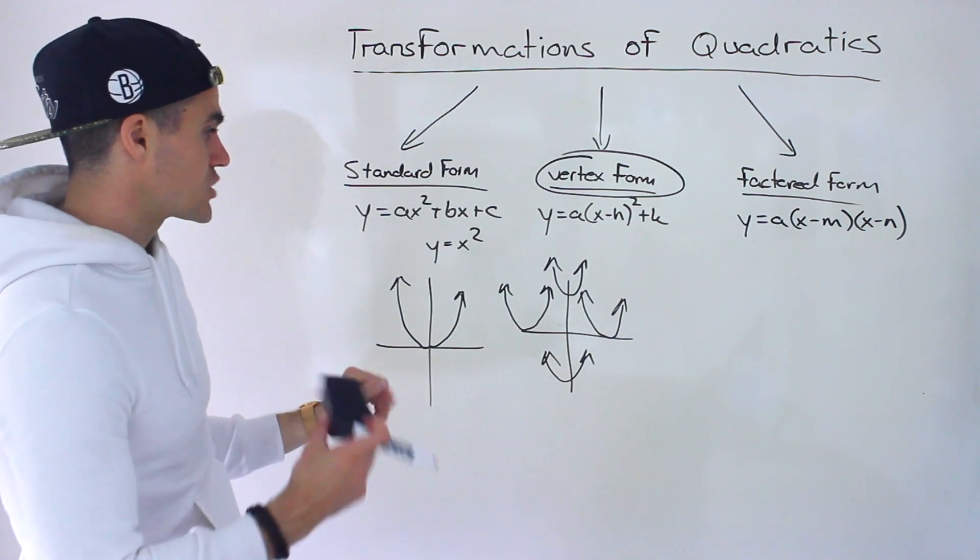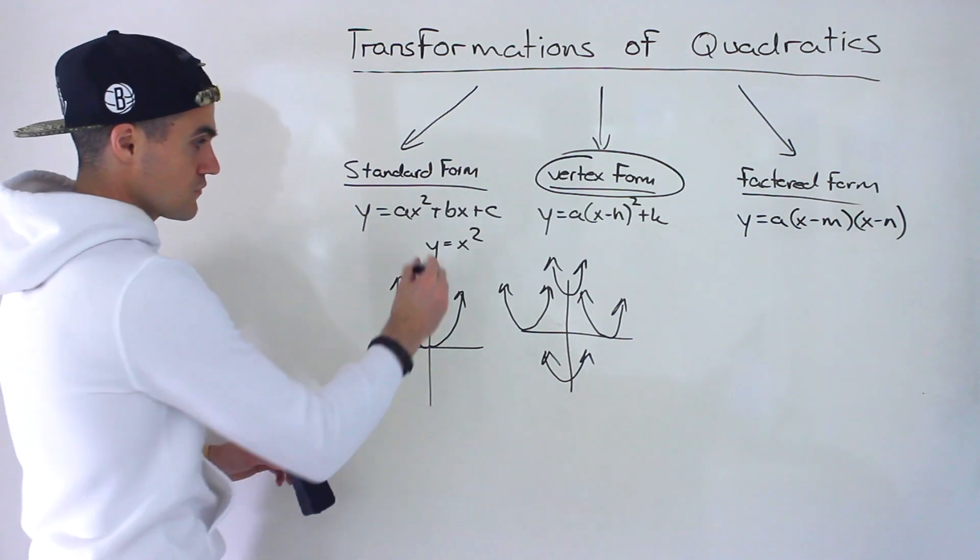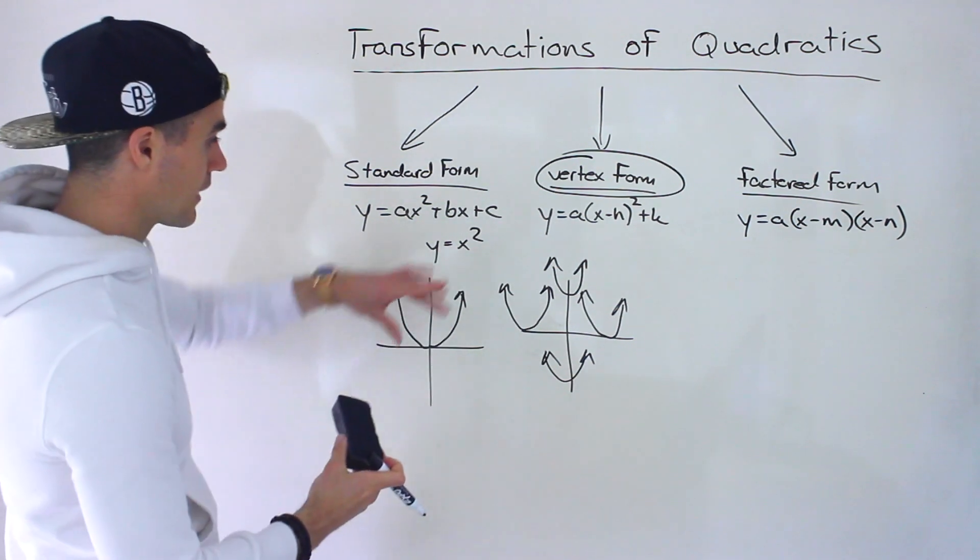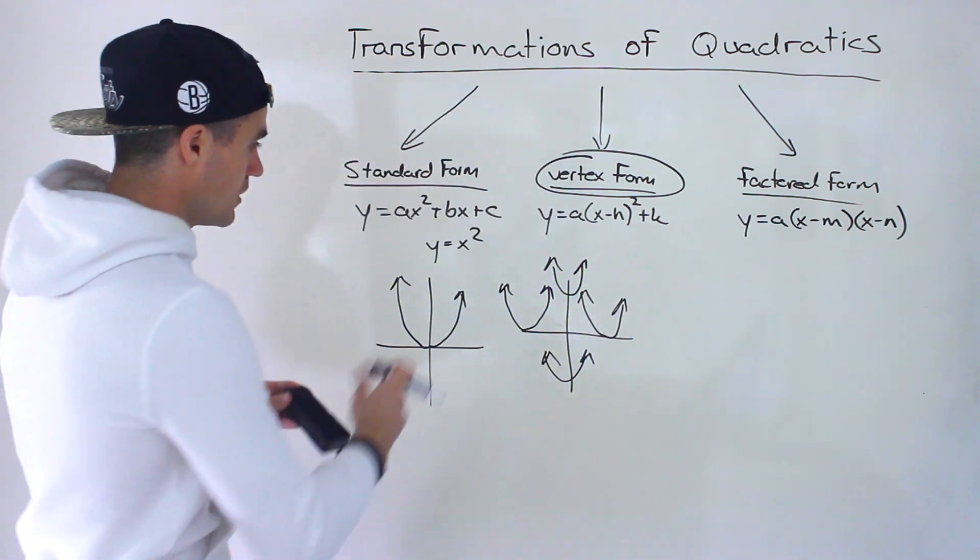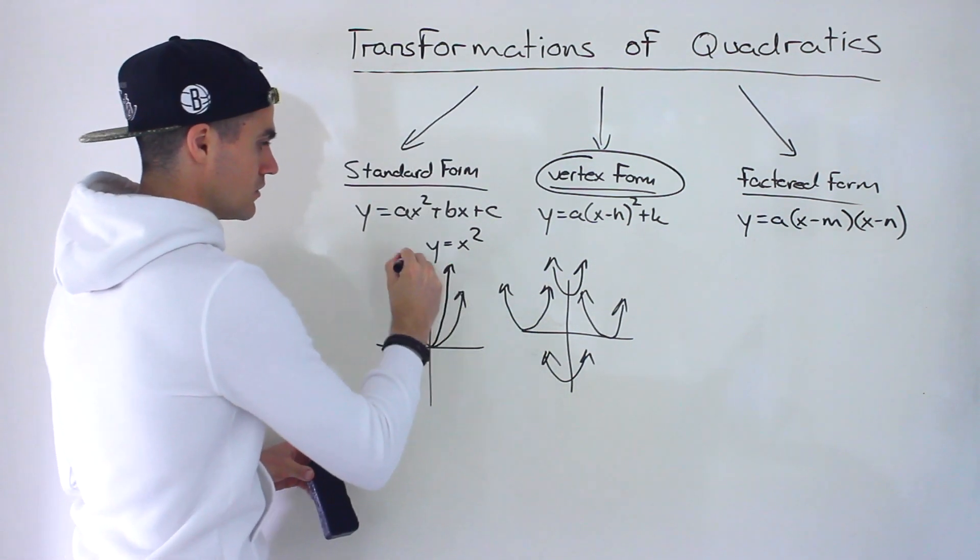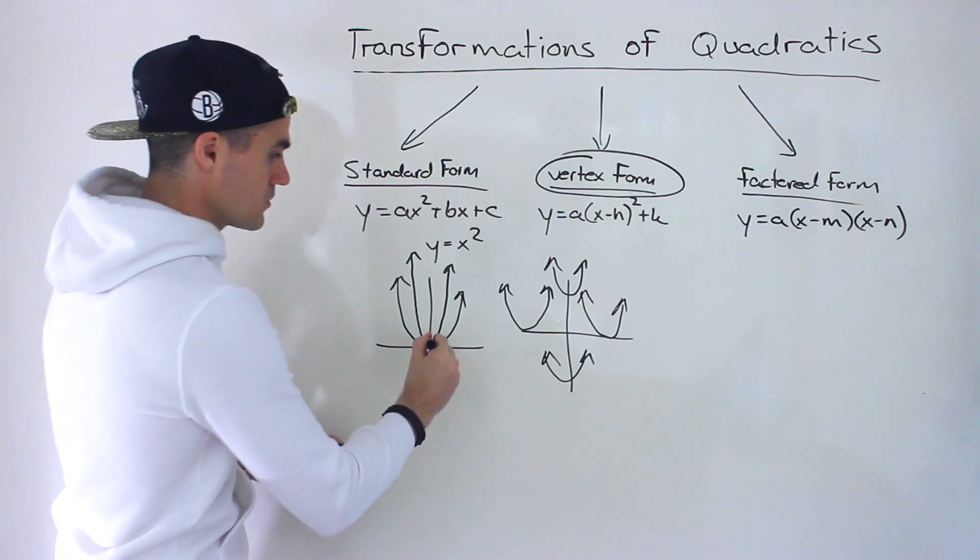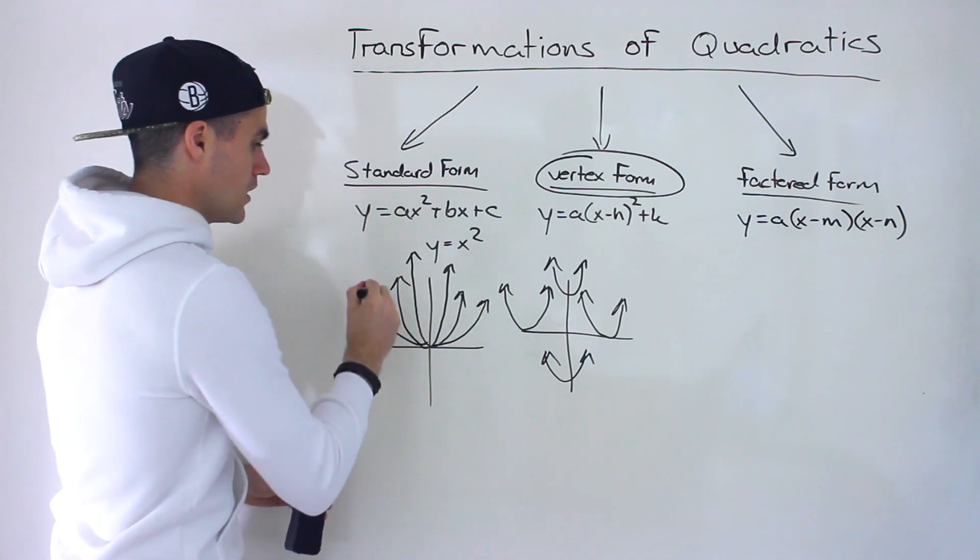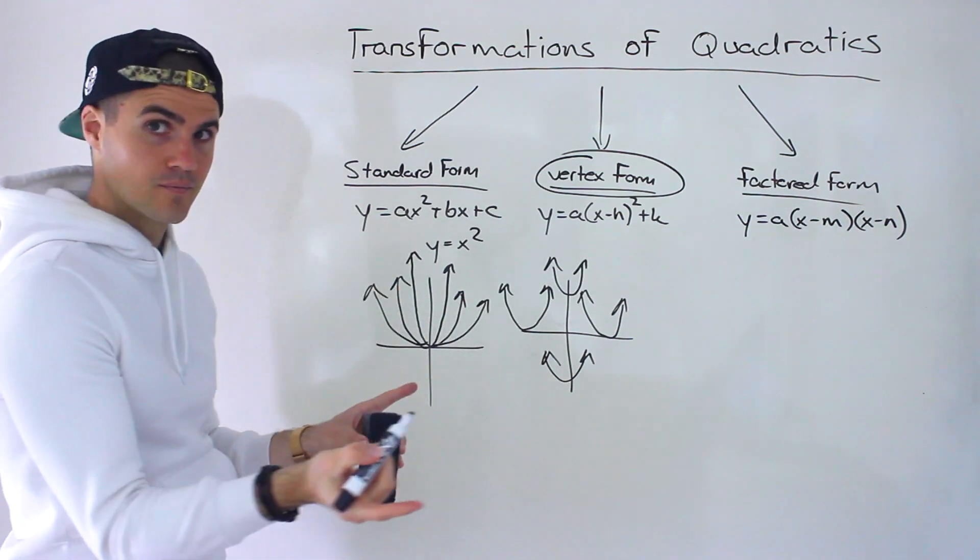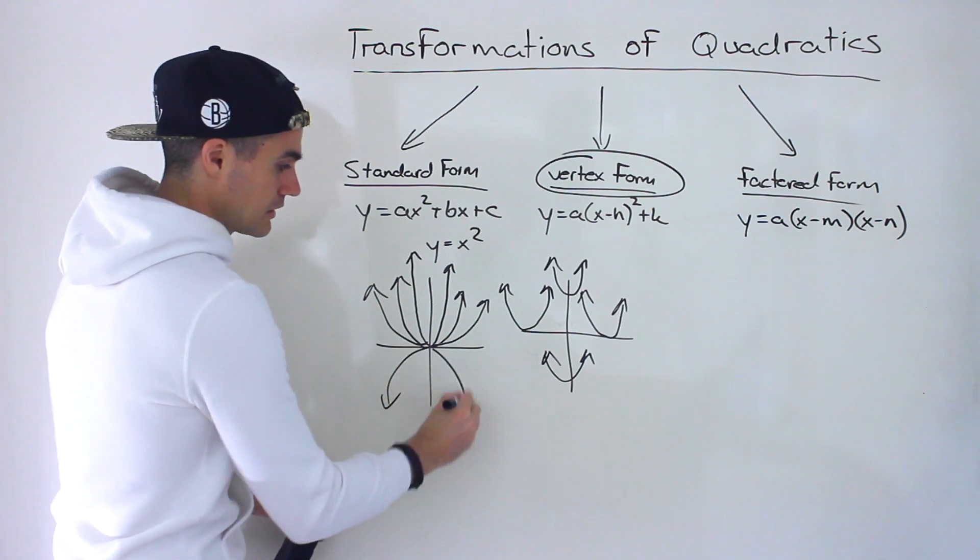We can also do things like stretches and compressions. That's another type of transformation. So if this is y equals x squared, if we vertically stretch it, what would happen is it kind of gets taller like that. We could also take y equals x squared and vertically compress it, so it would look something like that. We can also reflect it in the x-axis, so it would be pointing downwards like this.